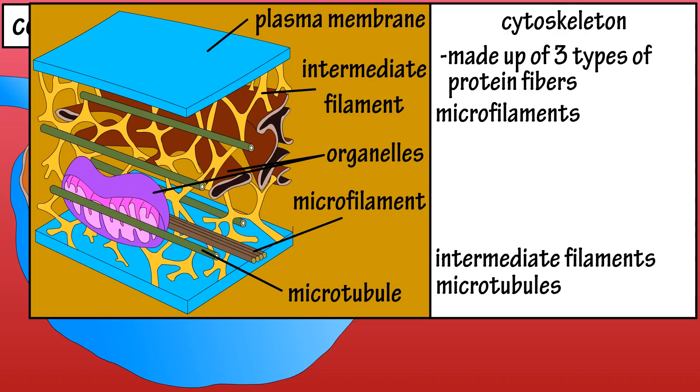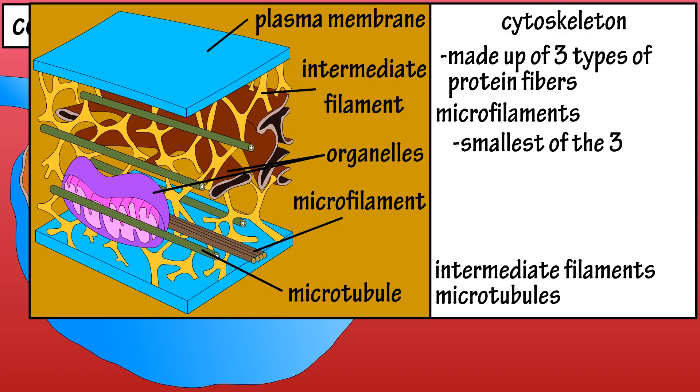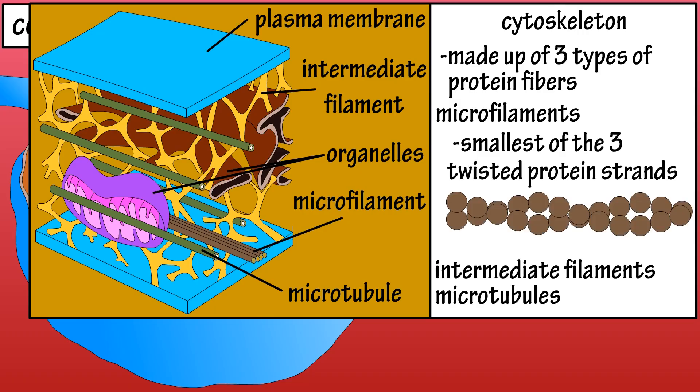Microfilaments are the smallest of the three, and they are made of twisted strands of proteins. They can be pulled together to shorten the cell, such as in muscle contraction.